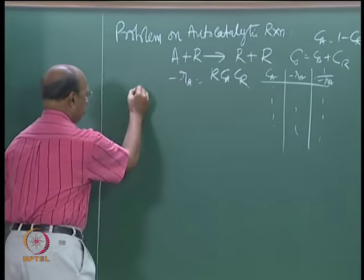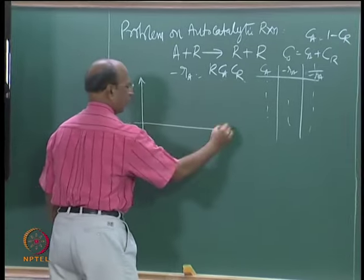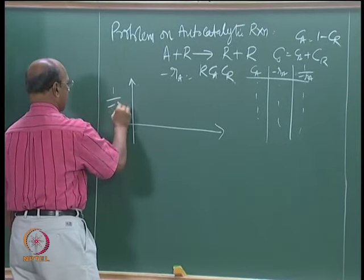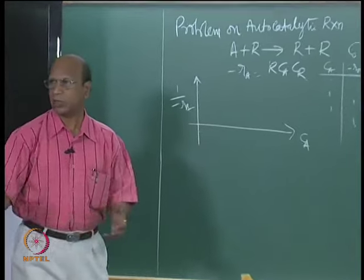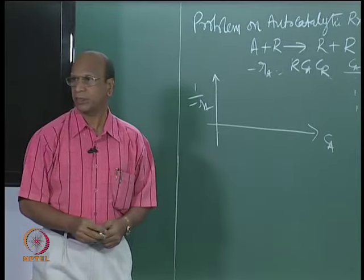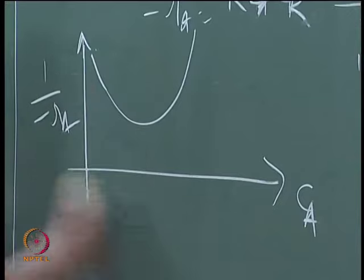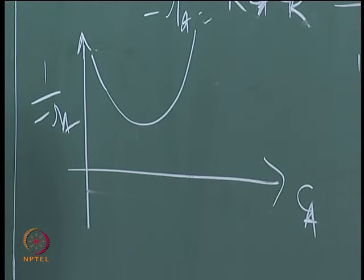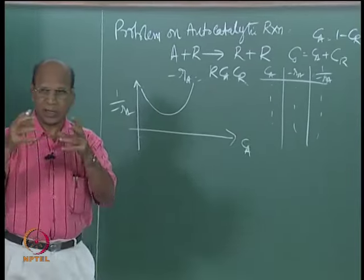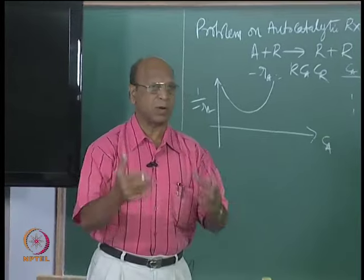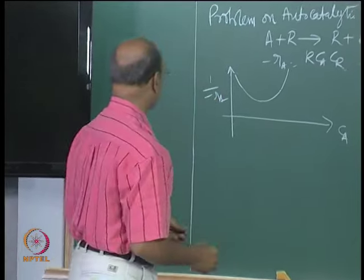Once you get the data, now you plot. This is 1 by minus R_A versus C_A, or you can also plot versus X_A — whatever is convenient. Then you will get something like this curve where C_A times C_R, the product, is maximum at one point — it may come around 0.5 or 0.55.